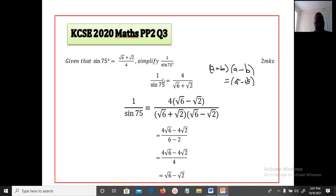That is 1 over sine 75 degrees equals 4 over root 6 plus root 2. Now this, we will do what is called rationalizing the denominator. We will multiply this by a conjugate pair.